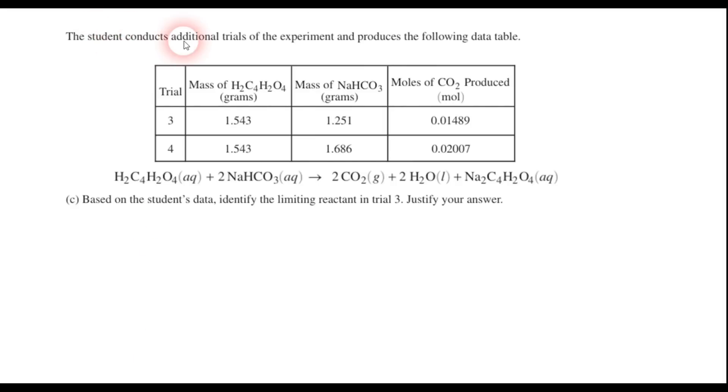Now, moving on to Part C, we have a student who's conducting additional trials of the experiment and produces this data table here. We have two more trials in the equation. And it says, based on the student's data, identify the limiting reactant in trial three and justify your answer. So if we look at trial three, it looks like the student is taking 1.543 grams of maleic acid and reacting it with 1.251 grams of sodium bicarbonate. And we want to find out how many moles of carbon dioxide will be produced. So I'm going to convert both of these to moles of carbon dioxide, since this is a limiting reactant question. So in our first step, just like we always do, we convert to moles. All roads lead to moles. So I'm going to convert grams to moles, grams on the bottom, one mole on top. And if I consult the periodic table, I find that there are 116.07 grams in a mole of maleic acid. So I can cancel grams top and bottom.